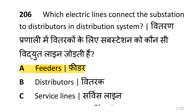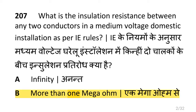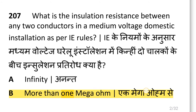Dear friends, we are going to see transmission and distribution. Which electric lines connect the substation to distributors in the distribution system? That is feeders. What is the insulation resistance between any two conductors in a medium voltage domestic installation as per IE rule? That is more than one mega ohm.